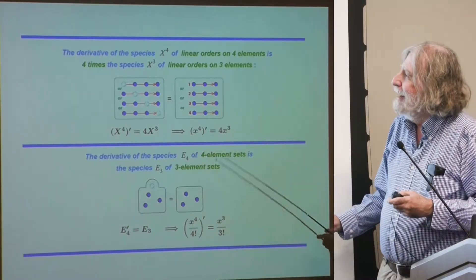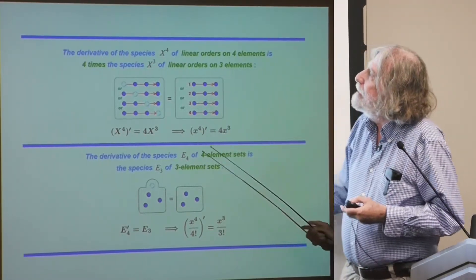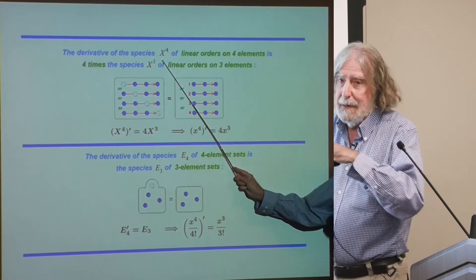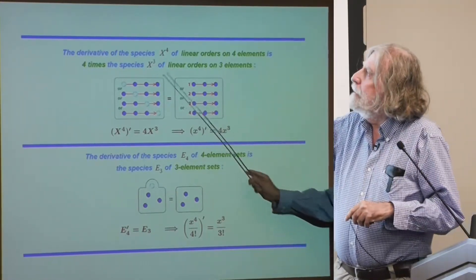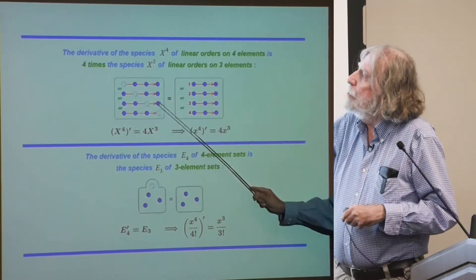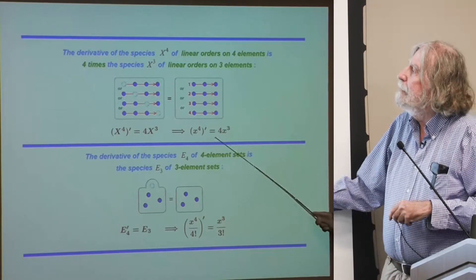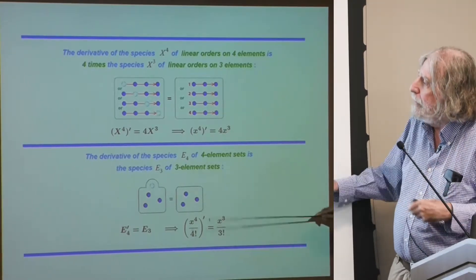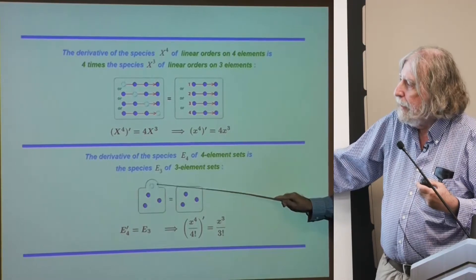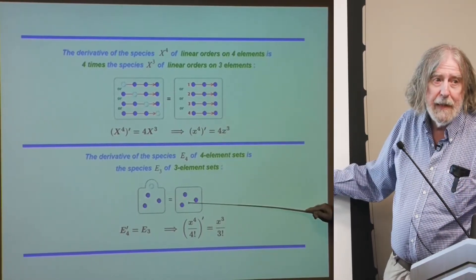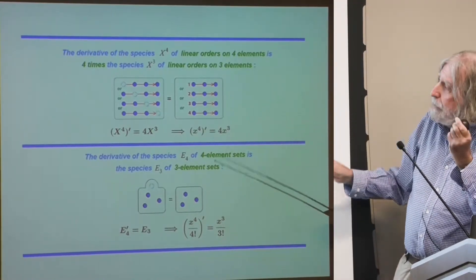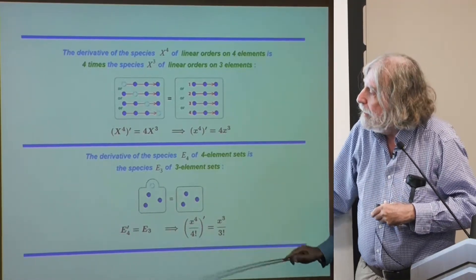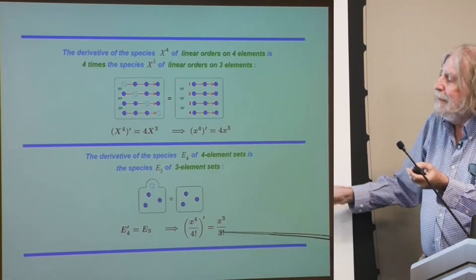It works correctly for monomials. The derivative of species X^4 — linear orders on four elements — is four times species X^3, because there are four places to put the extra point. The derivative of species E_4, or four-element sets, is E_3. There is no factorial factor, because if you take any set and add another point, it amounts to giving the same set as far as taking all sets — fixing cardinality 3 for the resulting set works out correctly.